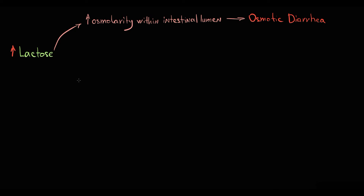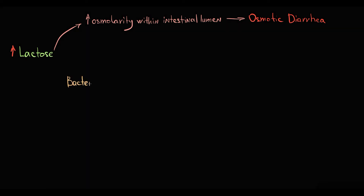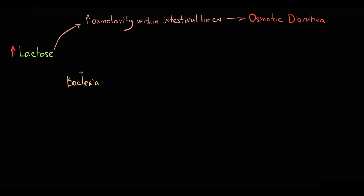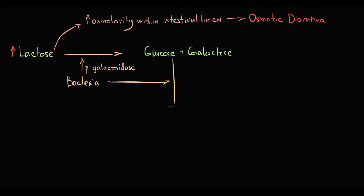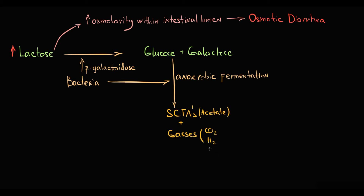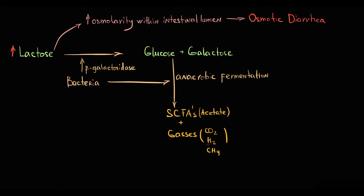Also, when increased amounts of lactose reach the large intestine, intestinal bacteria such as E. coli take up lactose — which is essentially food for them. Bacteria in the large intestine do not have enough oxygen for aerobic fermentation, so the only way to degrade lactose is anaerobic fermentation. They secrete the specific bacterial enzyme beta-galactosidase, which degrades lactose into glucose and galactose. These two monosaccharides then undergo anaerobic fermentation, producing short-chain fatty acids such as acetate, and gases such as CO2, hydrogen, and methane.